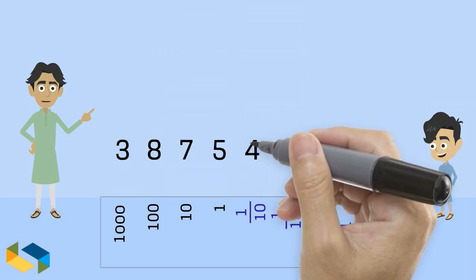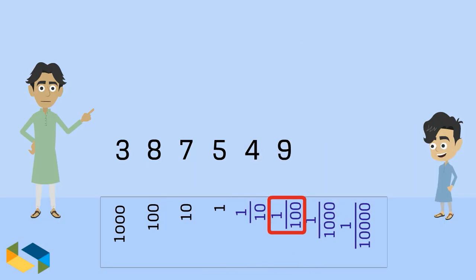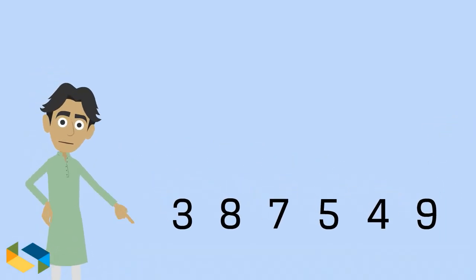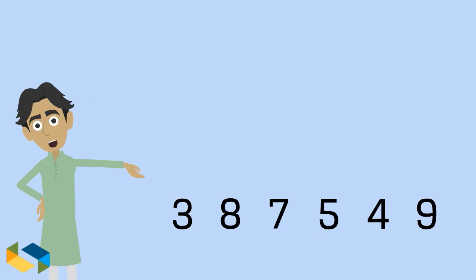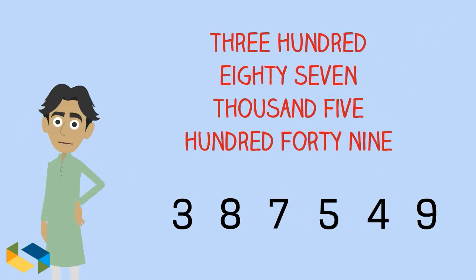So let's say we add 4 tenths and 9 hundredths of 1. But there seems to be a slight problem here. When you see these digits without their place value names, you don't know what the number really is. It actually now looks like 387,549, which it is not.